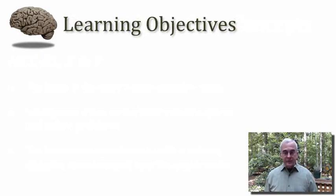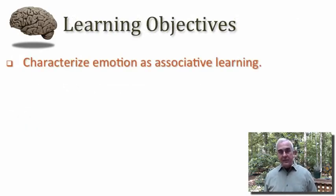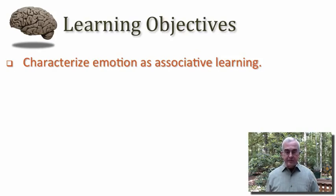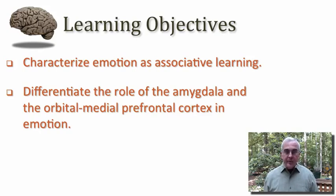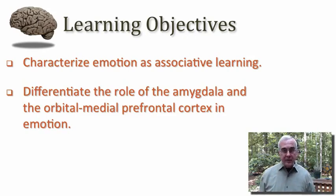My learning objectives for us today are several. I want you to be able to characterize emotion in neurobiological terms — that is, to characterize emotion as a form of associative learning. I want you to understand something about the brain centers that do this job of associative learning in the emotional domain. Two particular brain centers we'll spend much of our time discussing are the amygdala and the orbital and medial sector of the prefrontal cortex, and how these structures participate in the experience and expression of emotion.